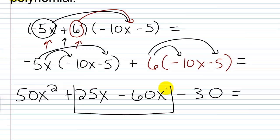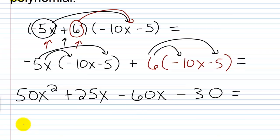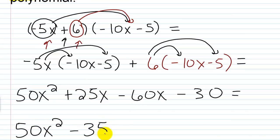We don't want to leave it like this, so we do 25 minus 60, which is negative 35. So our final answer is 50x squared minus 35x minus 30.